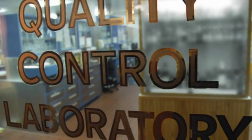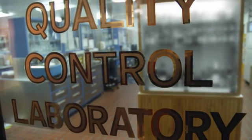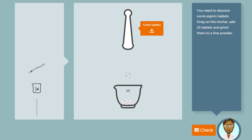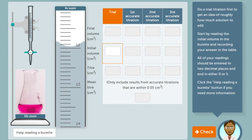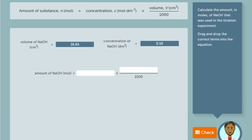In this activity as a quality control chemist at the aspirin manufacturing plant, you will perform a titration experiment to determine the exact amount of aspirin in a tablet from the test batch. You will need to check that the results comply with the quality standards at the plant.